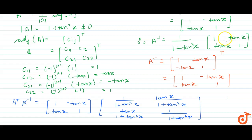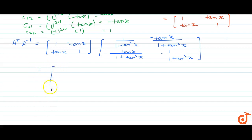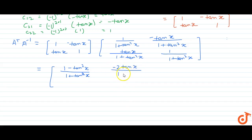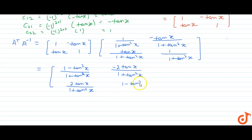A correction: one entry should be -tan x, so the corresponding entry becomes -tan x/(1 + tan²x). Multiplying these two matrices, we get: (1 - tan²x)/(1 + tan²x), then -2tan x/(1 + tan²x), then 2tan x/(1 + tan²x), then (1 - tan²x)/(1 + tan²x).